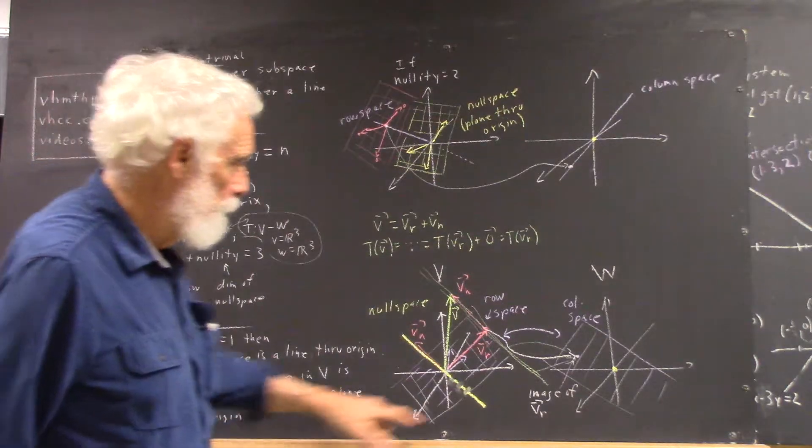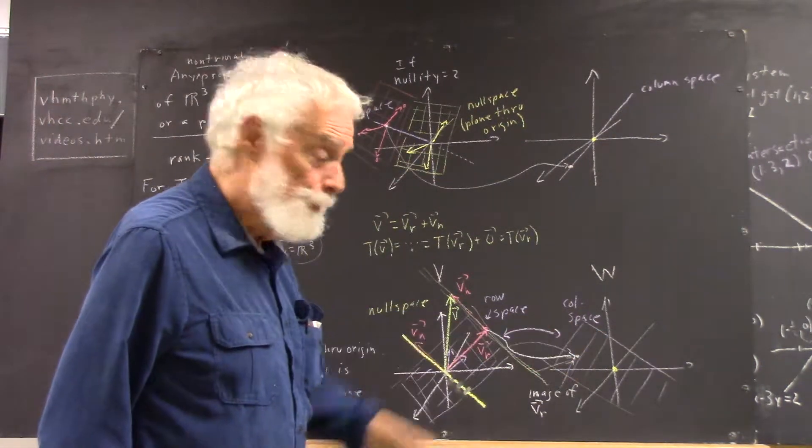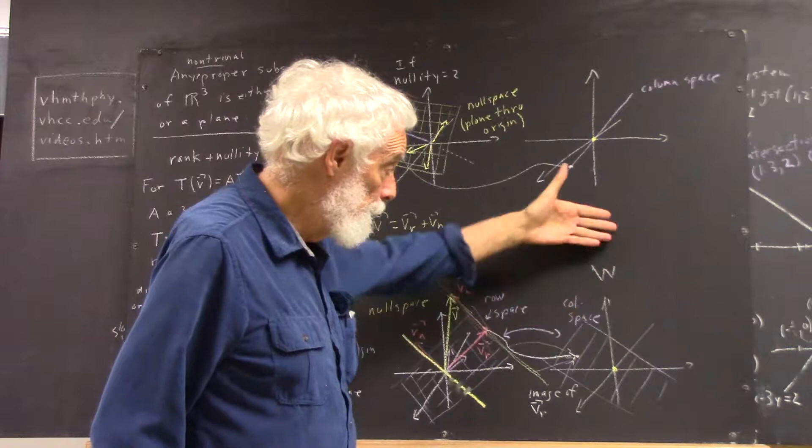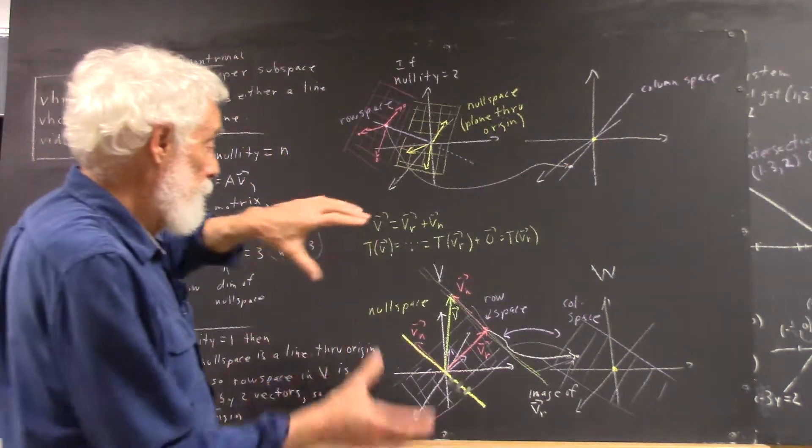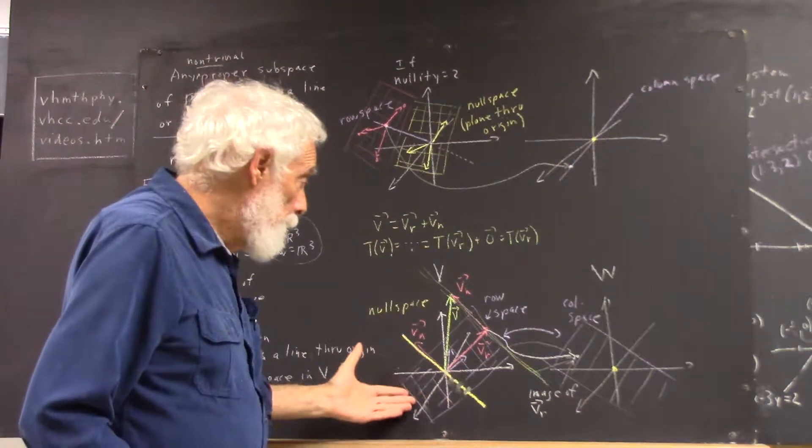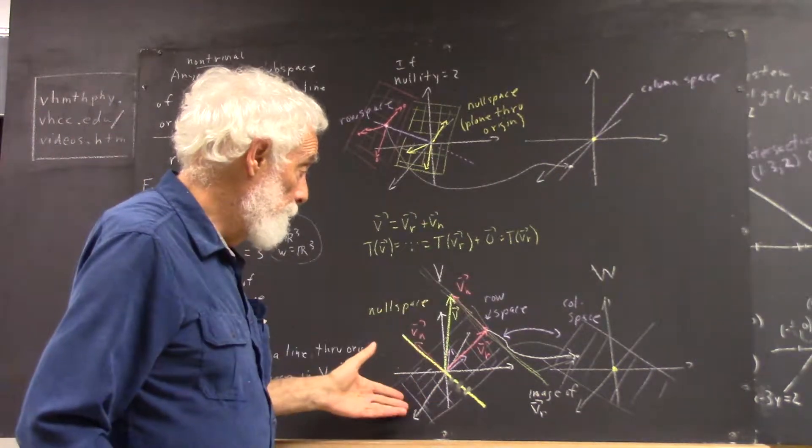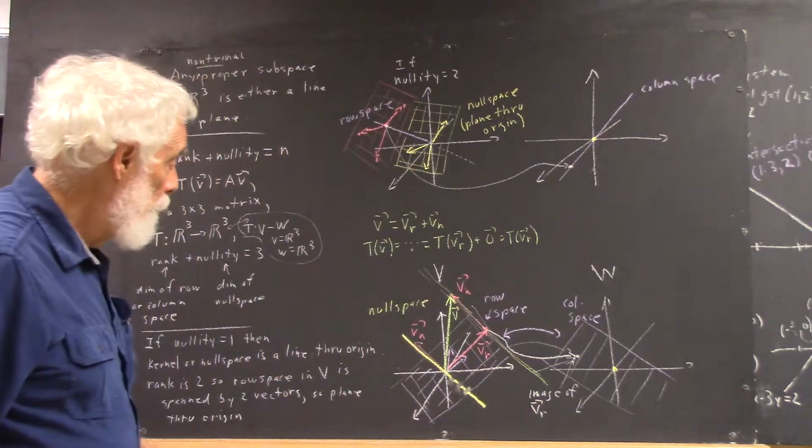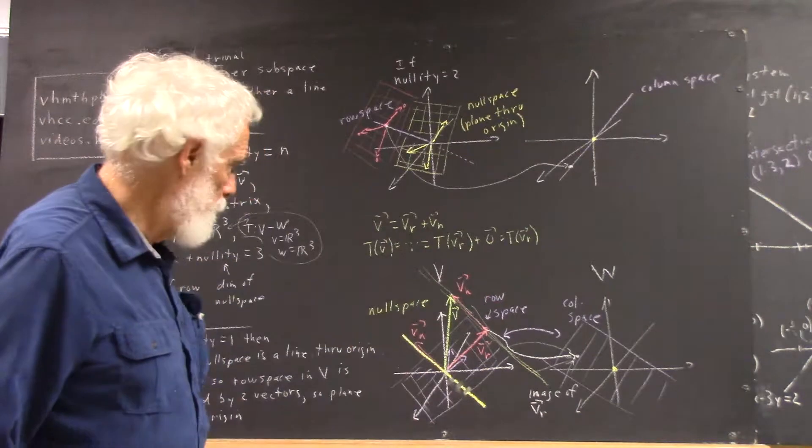And I didn't write it down, but your column space has the same property. It's going to be a different plane because it's over here in W, and it's not going to necessarily have the same orientation that the row space plane in V has. So I've attempted to draw a section of each plane.